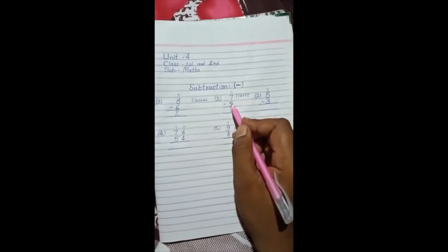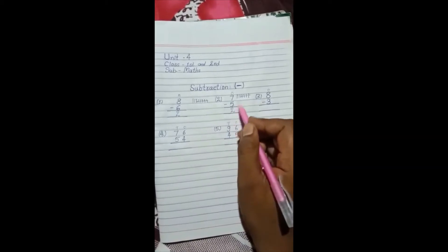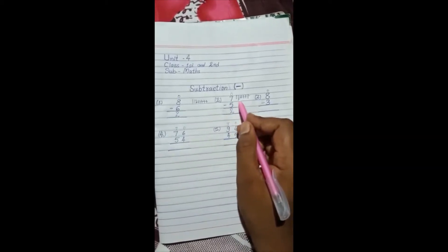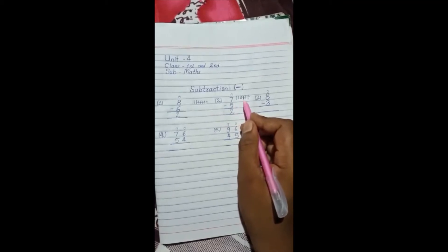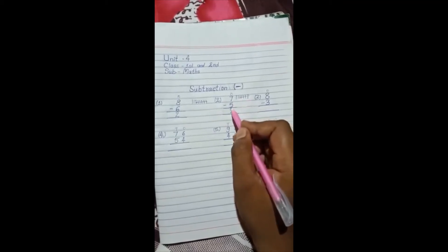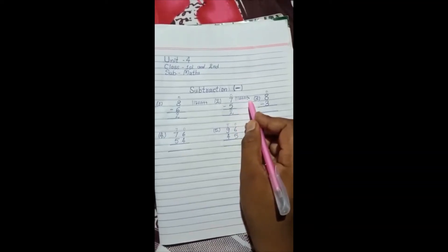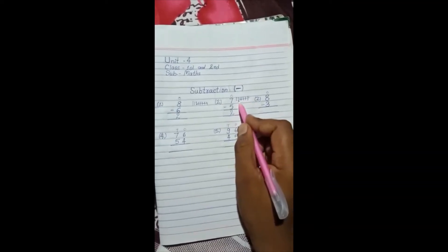Next is 7 minus 5 is equal to. 7 is there. First we'll draw 7 lines. 1, 2, 3, 4, 5, 6, 7. From these we'll cross out 5. 1, 2, 3, 4, 5. Cross out 5. How many remain? 2. 1, 2.